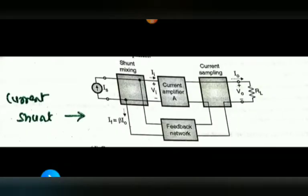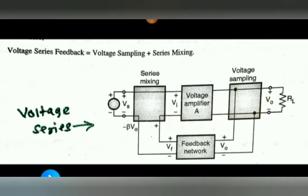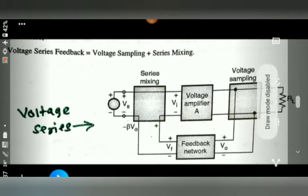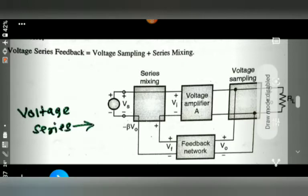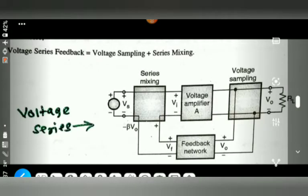There are four types of feedback amplifiers: current shunt, current series, voltage shunt, and voltage series. First, let us look at the voltage series type. In voltage series feedback, it is a combination of series mixing at the input and voltage sampling at the output.